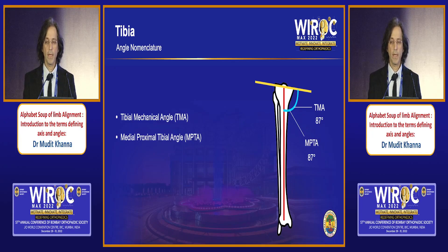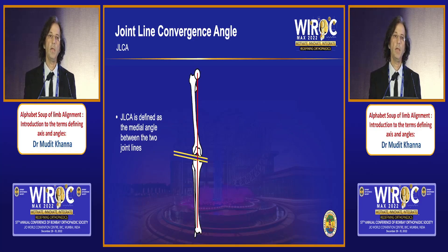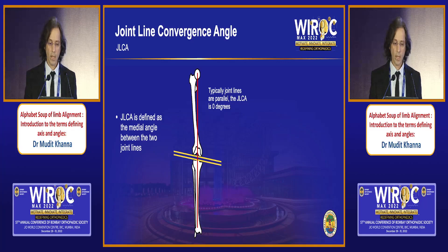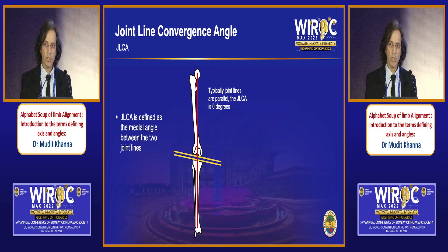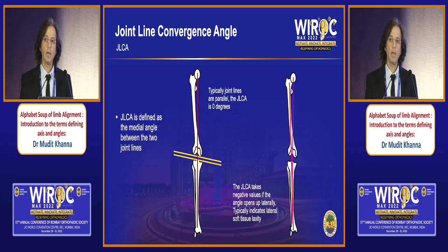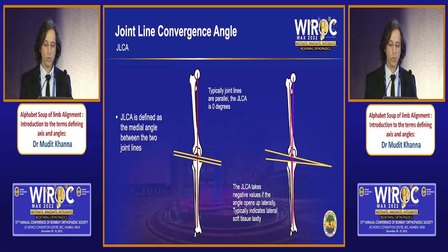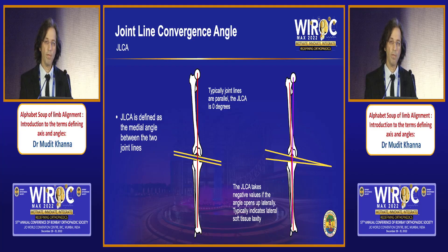The third important concept when talking about alignment is the Joint Line Convergence Angle (JLCA), which is essentially the angle formed between the distal joint line of the femur and the proximal joint line of the tibia. Normally these lines are parallel to each other and slope three degrees with the apex down. However, if the joint opens up laterally, an angle is created between the two joint lines — this is the JLCA. It is important to note because the overall alignment of the limb, the Hip-Knee Angle (HKA), is influenced by it.